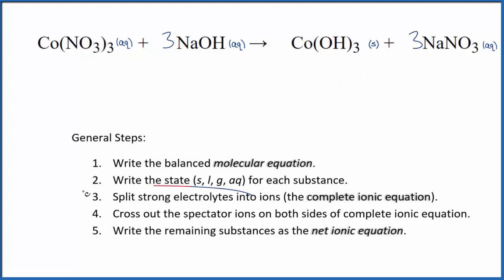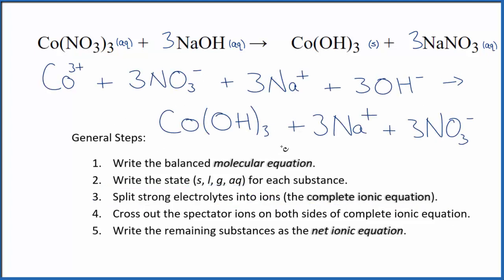Now we can split the strong electrolytes into ions for the complete ionic equation. That's going to look like this. So this is the complete ionic equation. Note that we don't split solids apart in net ionic equations. We keep those together. So the cobalt(III) hydroxide stays together.